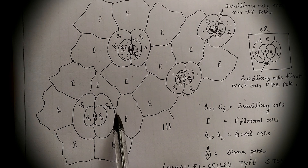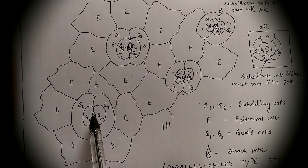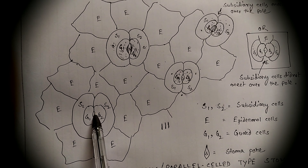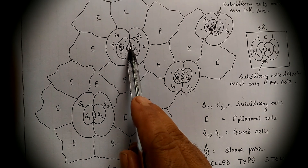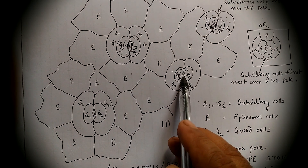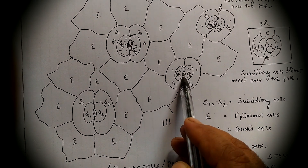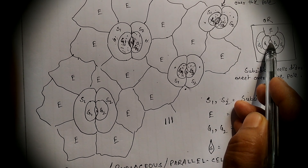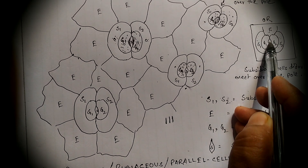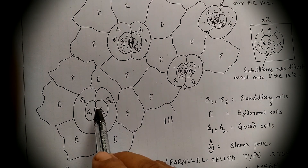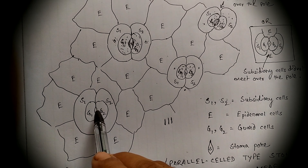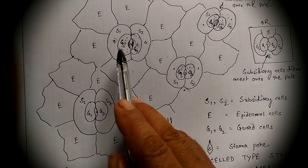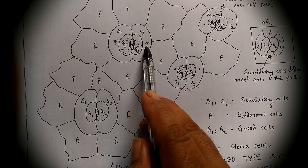This stomatal field shows multiple stomata — here is one stoma, here is another stoma, and even this one is a stoma. In each case, the number of subsidiary cells is 2.